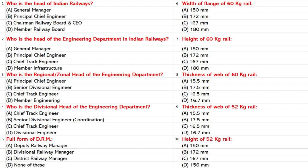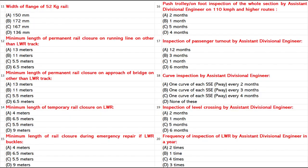Width of Flange of 52 kg rail: A. 150 mm. B. 172 mm. C. 167 mm. D. 136 mm. Answer: D. 136 mm.